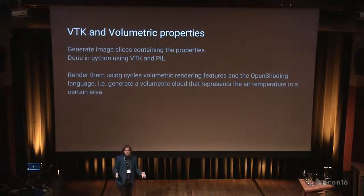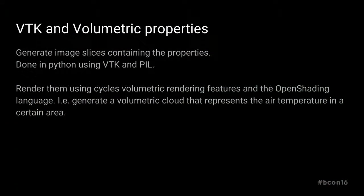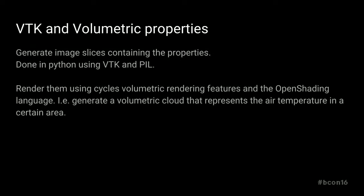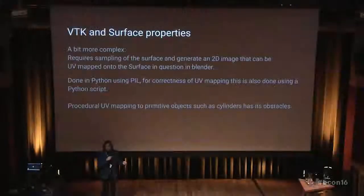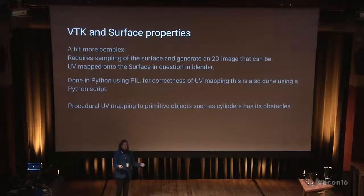For volumetric properties, you can use your mesh to create image slices and show volumetric results — for example, the air temperature at an object. This here was a simulation with a tube where air at very high velocity flows through, with an obstacle inside, and you can see where the air is getting hot. This is done using Cycles volume rendering. For surface properties it's the same approach: you create an image from your mesh and then UV-map that image onto your Blender mesh.